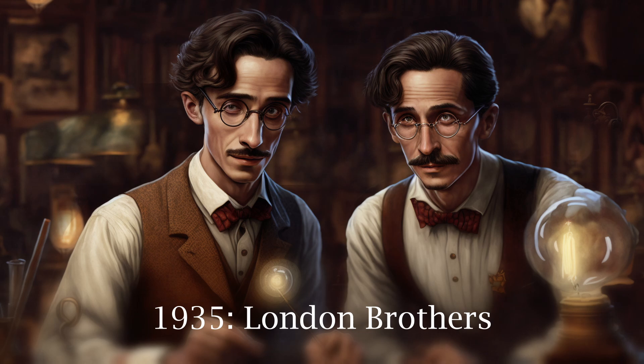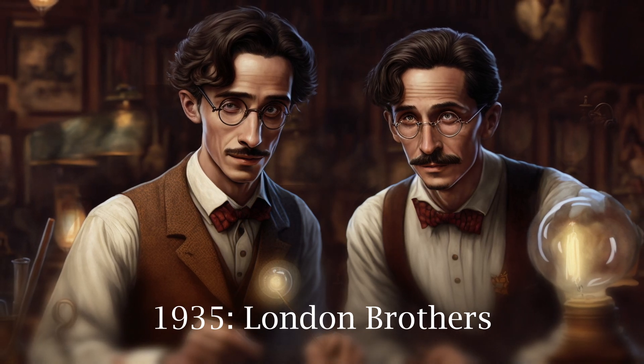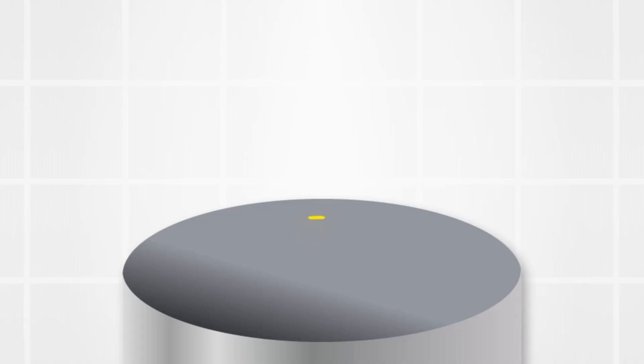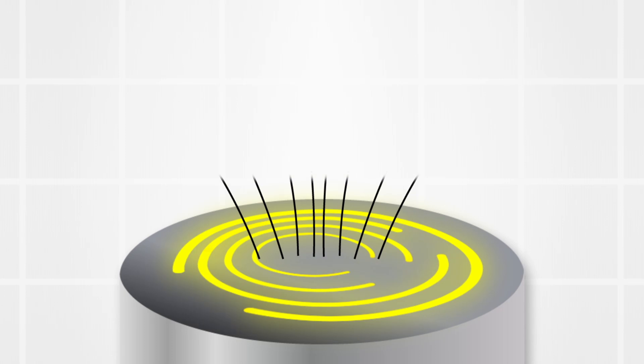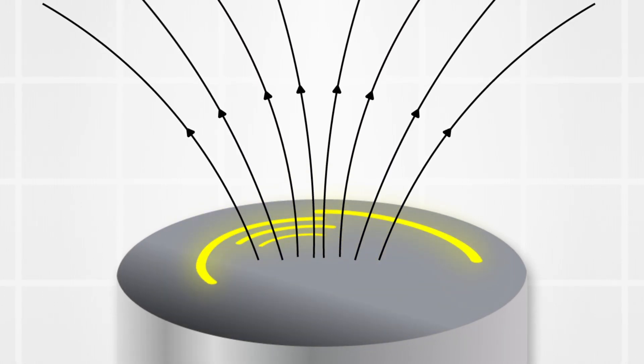However, in superconductors, this is not the full picture. Because this only works in changing magnetic field. But a superconductor will expel any magnetic field, even if it does not change. The London Brothers showed that a magnetic field in a superconductor generates supercurrents. And these supercurrents generate their own magnetic field, cancelling the exterior field.